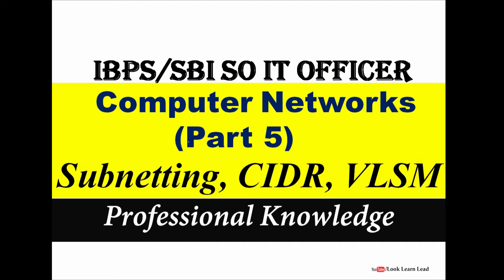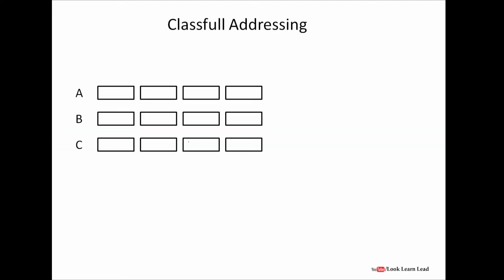Before going into detail, we would first know what classful addressing is. In classful addressing, for every class — suppose we have three classes — the number of net ID and host ID bits is fixed. For Class A, the first octet, that is the first 8 bits, is the net ID and the others are host ID.